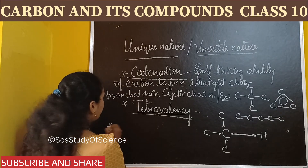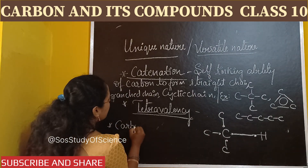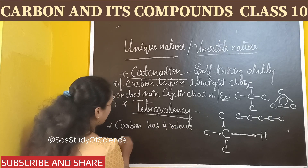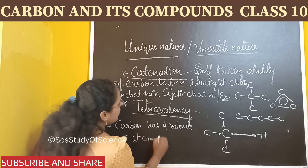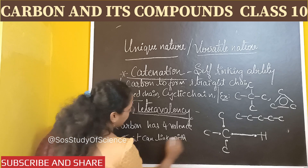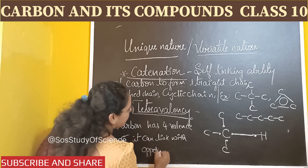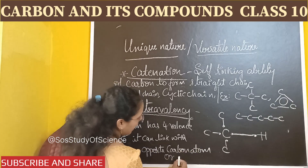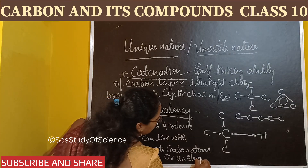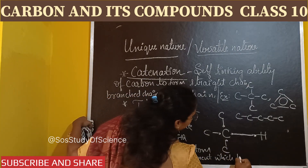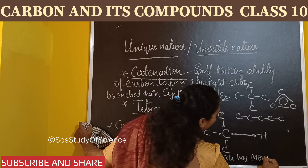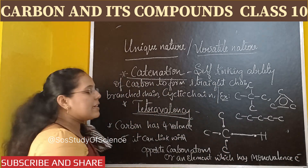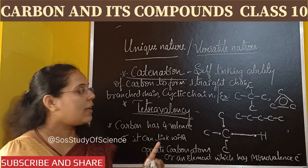So write the answer for this: Carbon has 4 valence electrons. It can link with opposite carbon atoms or with an element which has a monovalence electron — that is, an element which has a single electron. Catenation and tetravalency are the two important properties of carbon, and the entire structure of carbon compounds is based on these two properties.